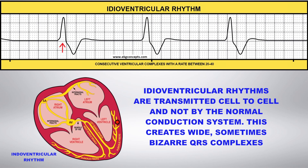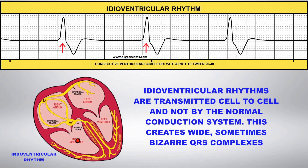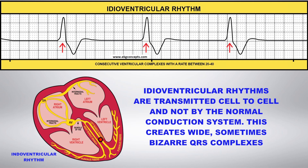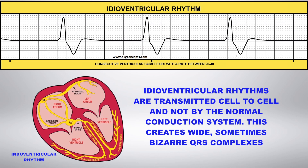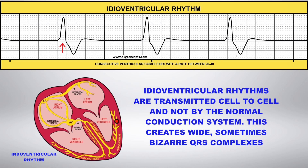Idioventricular rhythm occurs when the electrical impulse originates from a single site in the ventricle with a rate between 20 to 40 beats per minute. The atria and the AV node are no longer functioning as the primary pacemakers.